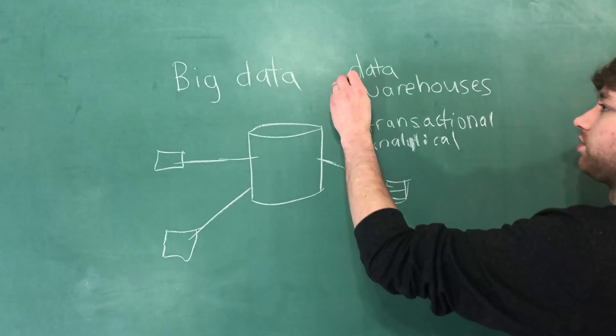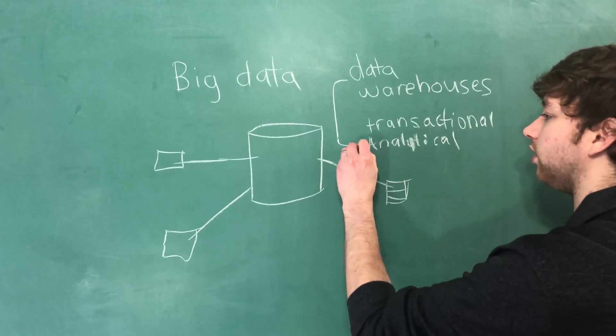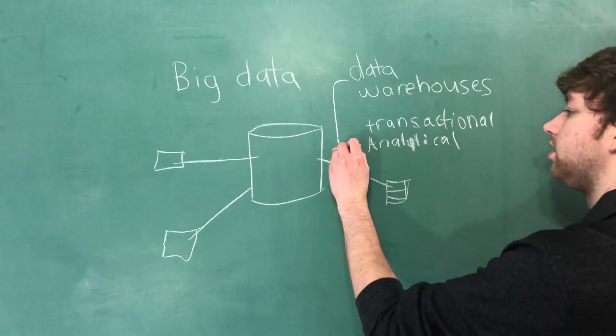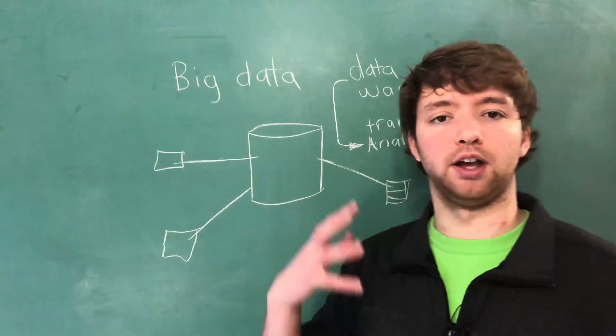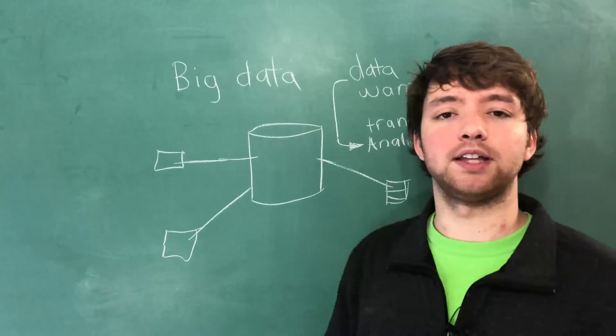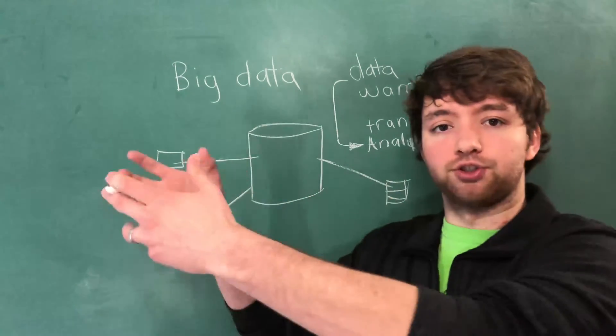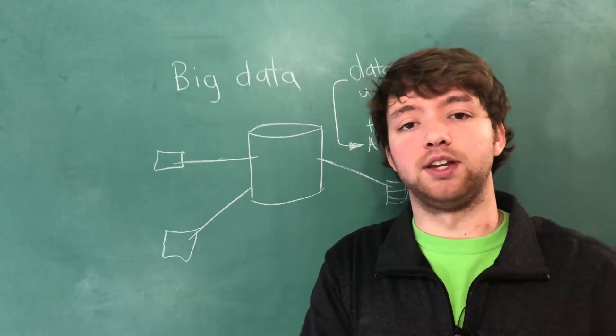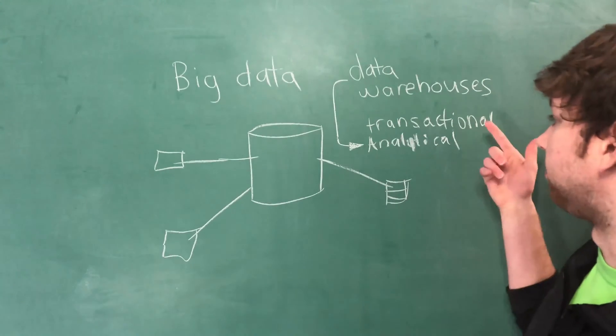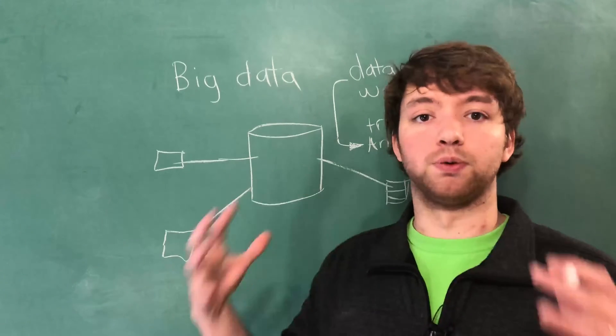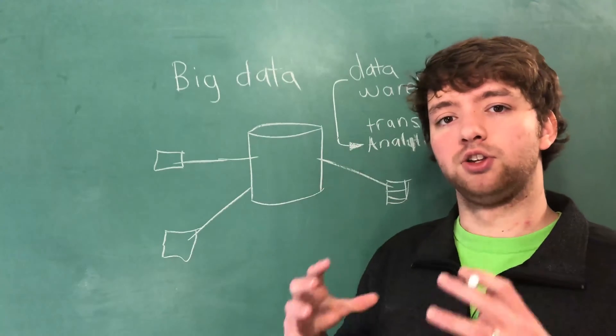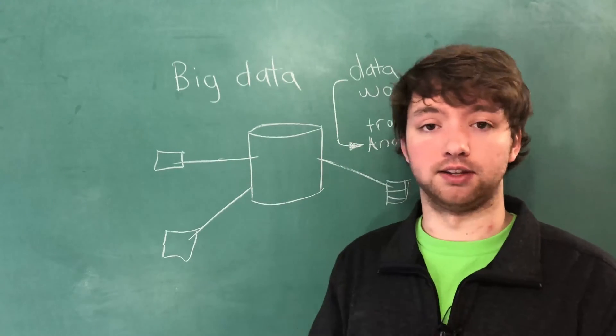The data warehouse is good for analytical processing. So oftentimes you will have a database powering a website, for example, and that's going to be optimized for transactional. And then we're going to extract that data and put it into a data warehouse where it's optimized for analytical, and that's where we're going to be using processing to run analytics on that data.